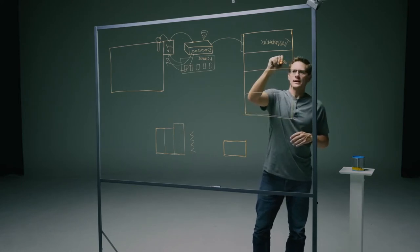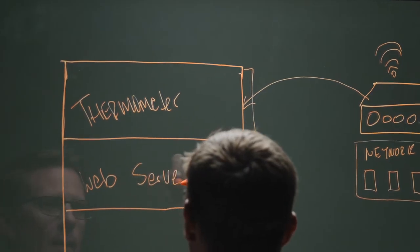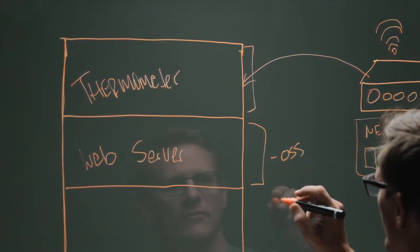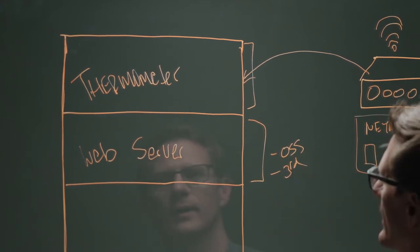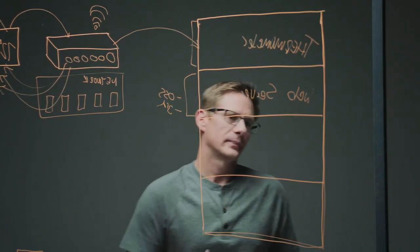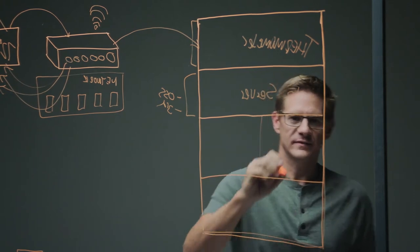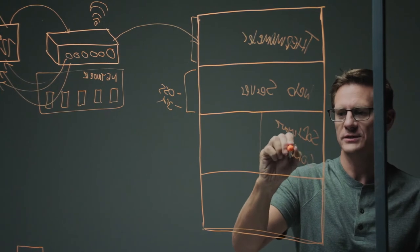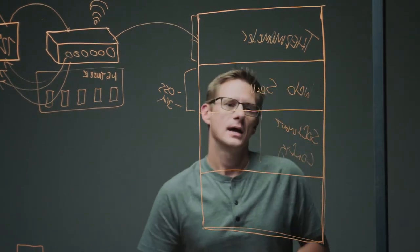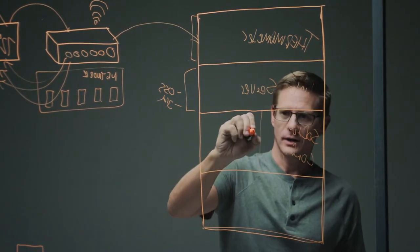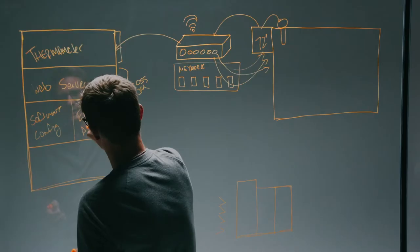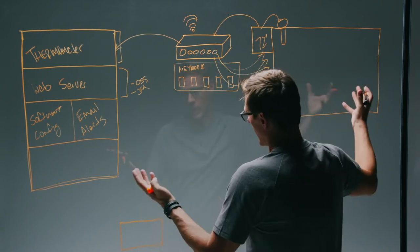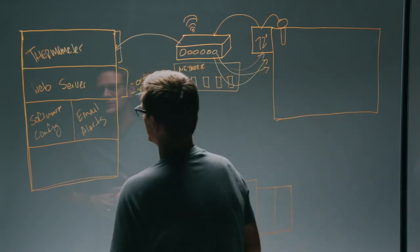So it also has a web server. This web server is a component that can come from open source software, from a third-party library, a number of sources, but they didn't craft that. Then this device also has software configuration to control how the device is running and what it can connect to. What it can connect to are things like email systems and alerts to be able to notify about the fish tank's water, temperature, food, and upkeep of the fish.